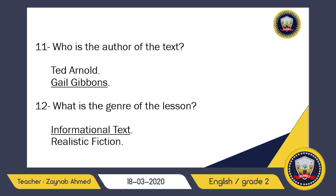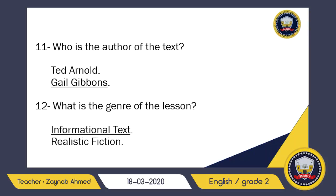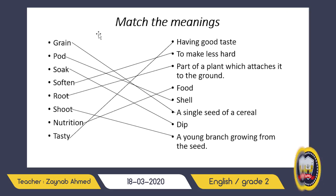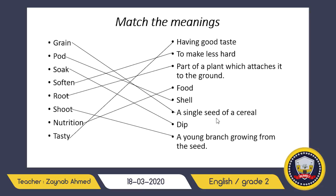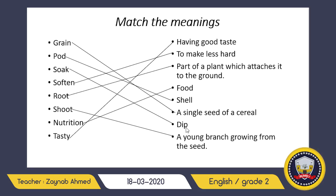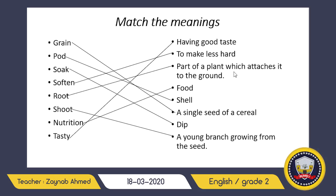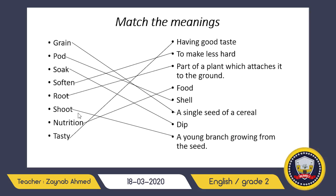Now let's move to meanings. I want you to go through these again so that by the end of this unit you know all the meanings. Grain: a single seed of a cereal. Pour. Shell. Soak: dip or soften to make less hard. Root: part of a plant which attaches it to the ground. Shoot: a young branch growing from the seed. Nutrition: food. Tasty: having good taste.